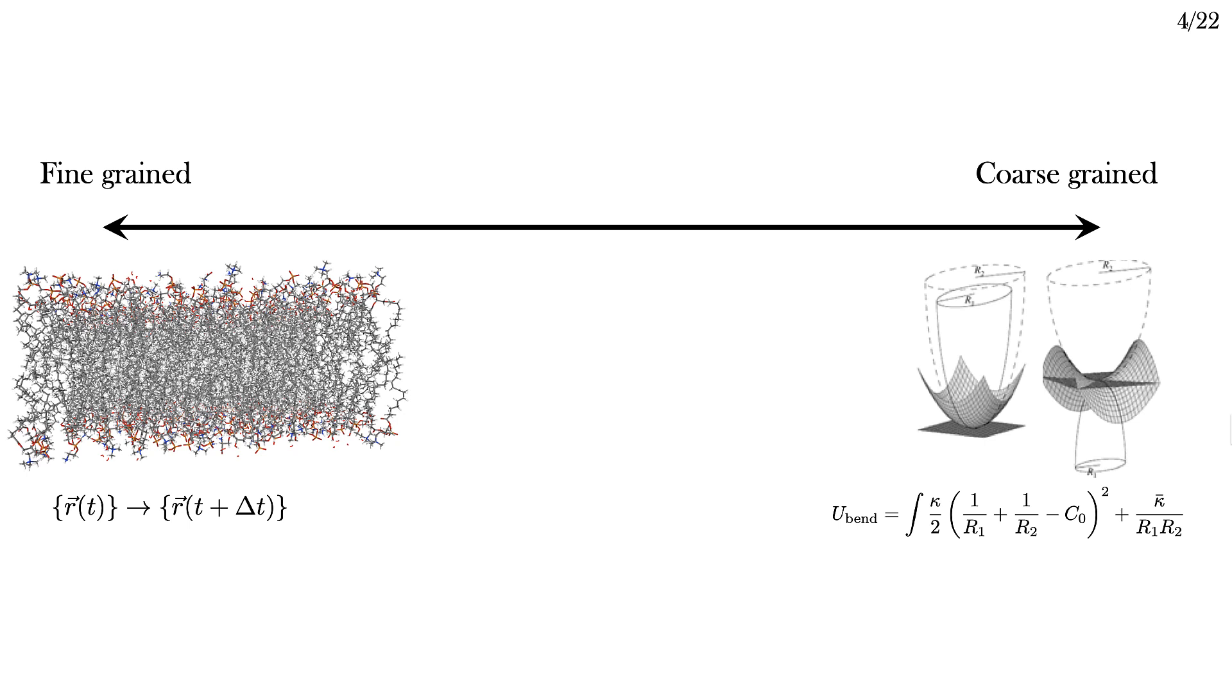At the other coarse graining extreme, we have Helfrich models. In this case, the membrane itself is the fundamental object being simulated, and it has no internal degrees of freedom.